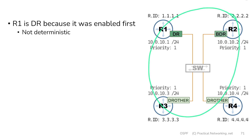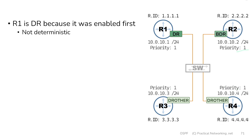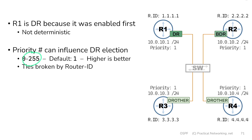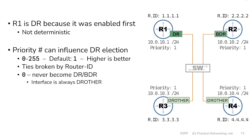If I wanted router 1 to remain the DR, I'd have to influence the election by modifying the priority number. The priority number is 0 to 255 and simply defaults to 1, and ties are broken by the router ID. There is one special priority number we didn't mention before — and that's the priority number of 0. I can set a particular interface priority number to 0 to indicate that that interface should never become the DR or BDR. Whichever interface is set to priority 0 will always be a DR-other no matter what.